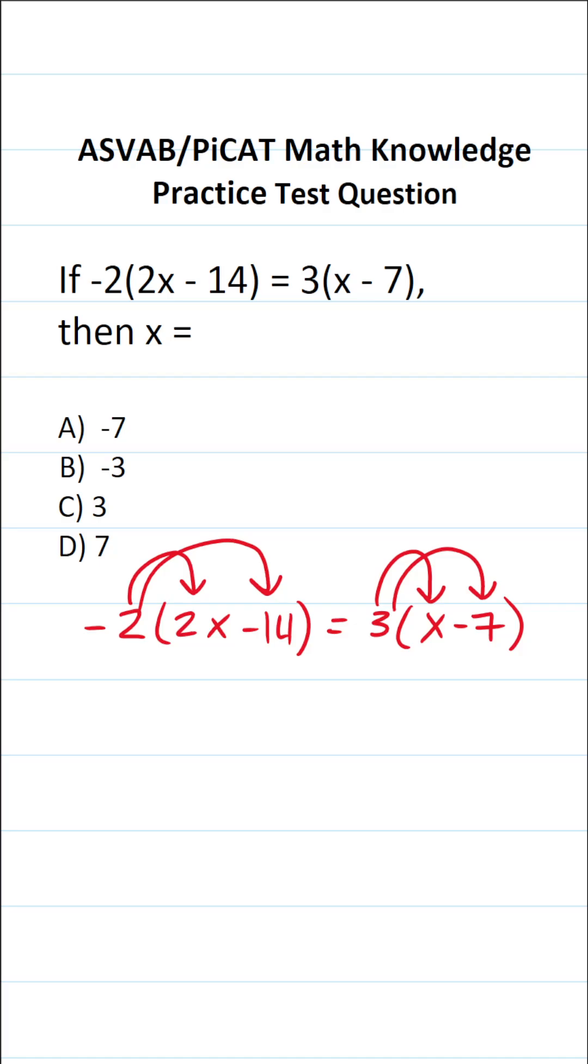Negative 2 times positive 2x, again a negative times a positive is going to be negative 4x. Negative 2 times negative 14, a negative times a negative is going to be a positive. And if you can't do negative 2 times negative 14 mentally, you can always do it off to the side. We have negative 14 times negative 2. Again we know our result is going to be positive.